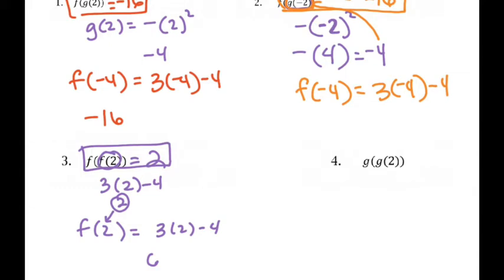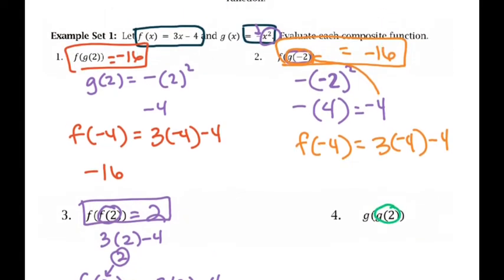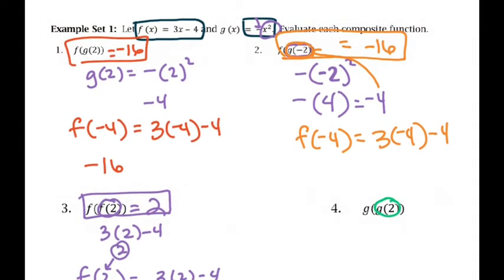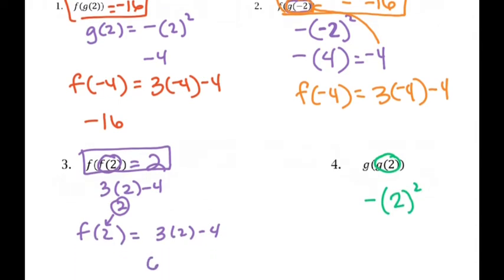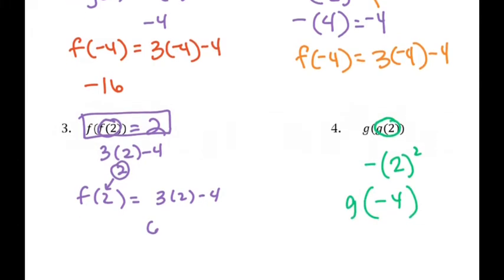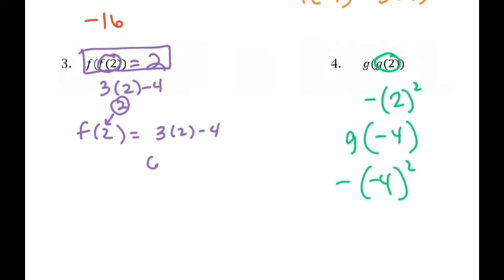Number 4, we're going to take g of g of 2. So g of 2, working from the inside, we're going to say negative and then 2 squared, so that's going to be negative 4. And then we're going to take g of negative 4, which means negative, negative 4 squared. Negative 4 squared is 16 and then negative, so that's equal to negative 16.